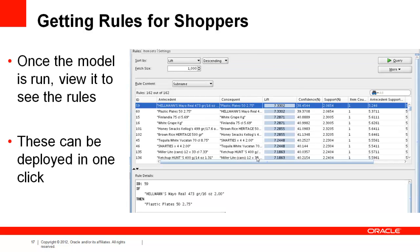At this point, we can run the model and view the results. This lets us view the results as a series of if-then clauses ranked by lift, confidence, or support. The three metrics are defined just the same here as they were in part one of this discussion.